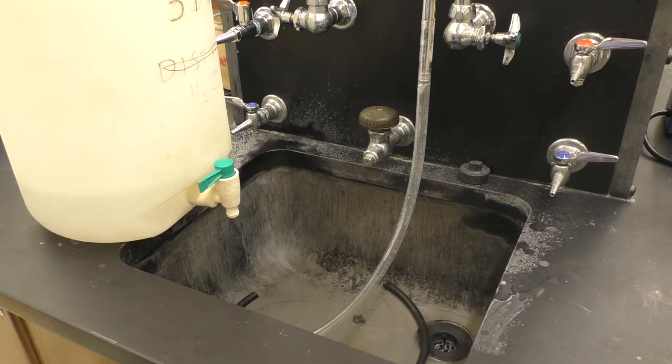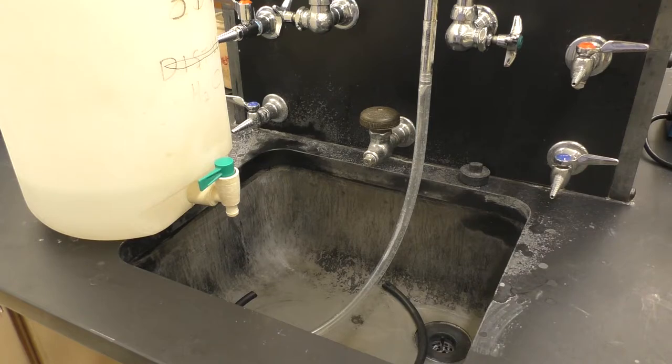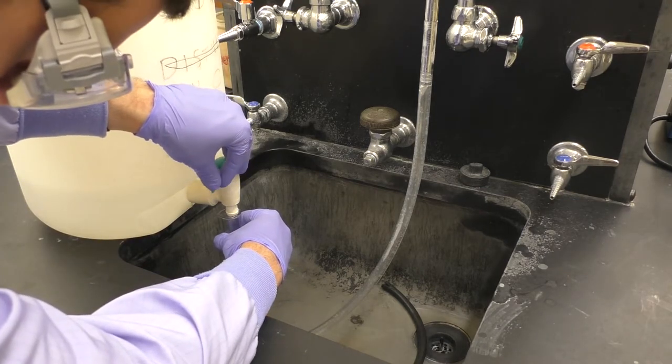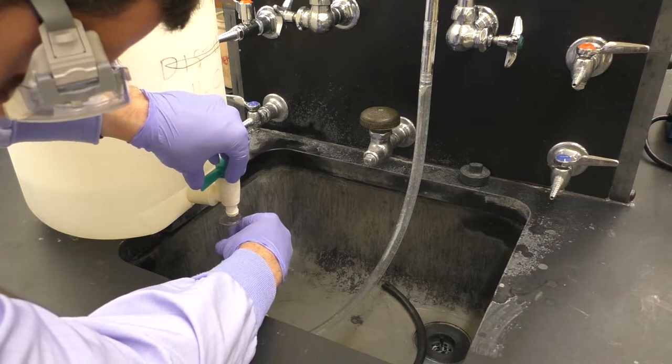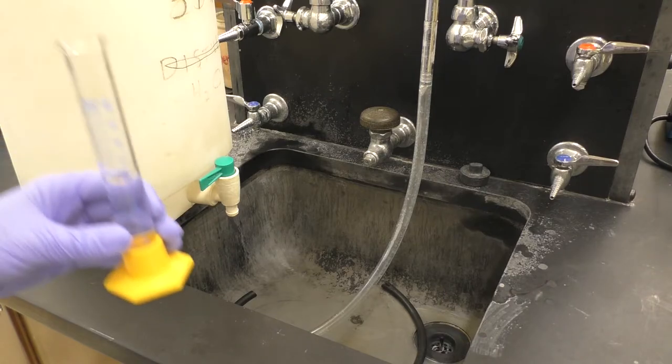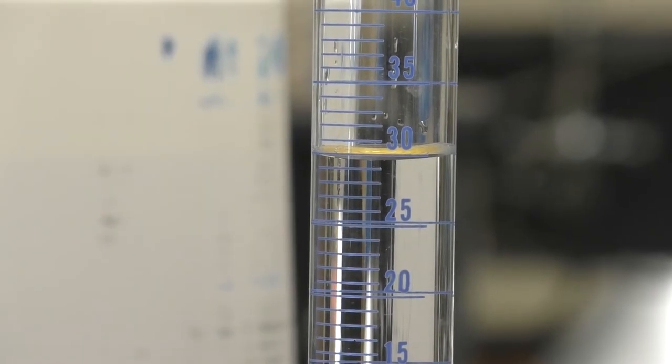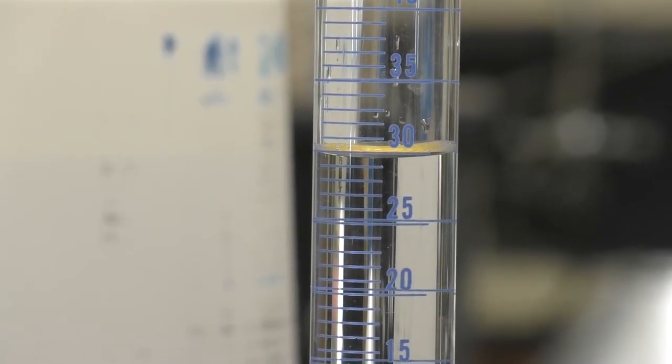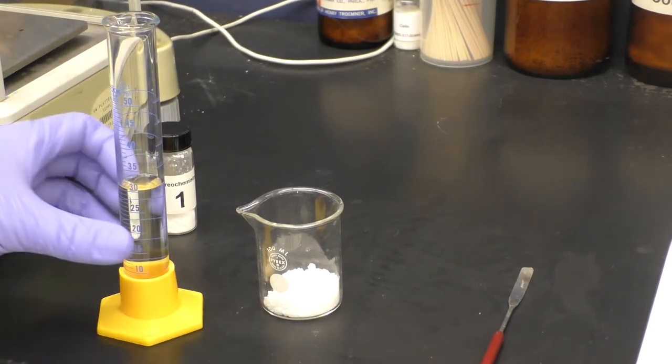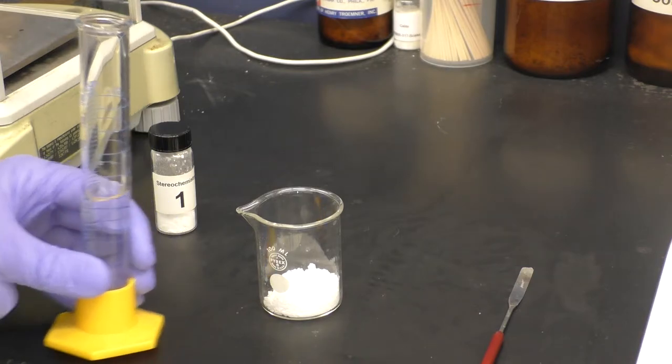Next, we come over to the distilled water spigot and take and measure 30 milliliters of distilled water. We can now take our 30 milliliters of water and mix it into the three grams of unknown and create our homogeneous solution.